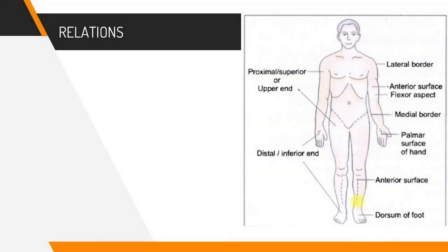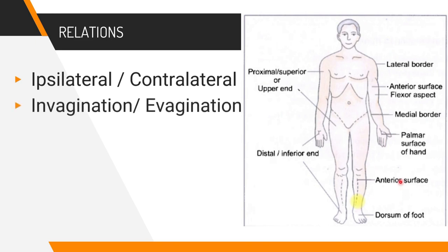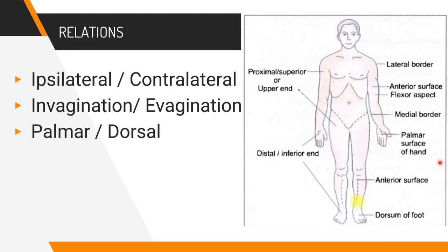Ipsilateral means on the same side of the body — for example, your right hand and right leg are ipsilateral to each other. Contralateral means on the opposite side — for example, your right hand and left leg. Invagination means a projection inward, whereas evagination is a projection outward. The palmar aspect is the surface having the palm, while the dorsal aspect is the back of the hand. The flexor aspect is the front or anterior of the upper limb when standing in anatomical position, whereas the extensor aspect is the back of the upper limb.